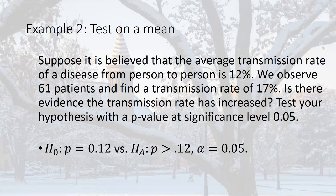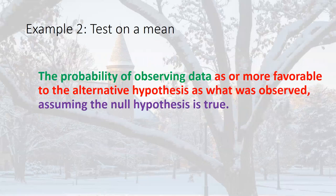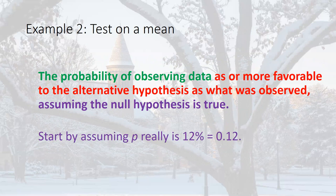We test this hypothesis with a p-value at significance level 0.05. The null hypothesis is that nothing has changed: p equals 12%. The alternative, since we are trying to find evidence of an increase, is that p is greater than 12%. The burden of proof is on us as researchers to show the probability has increased, so that goes in the alternative hypothesis.